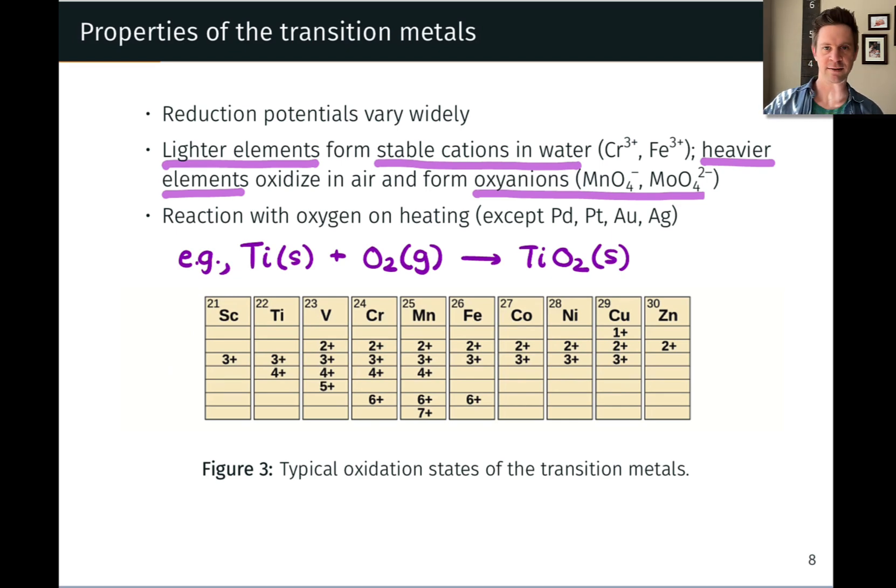If we were to look at the second and third rows of the transition series, we'd see that those elements tend to have access to higher oxidation states, as high as plus eight, for example. Their larger size is part of the reason for this. The smaller sized elements in the first row of the transition series just can't access that high of positive charge. The resulting charge density would be too high.